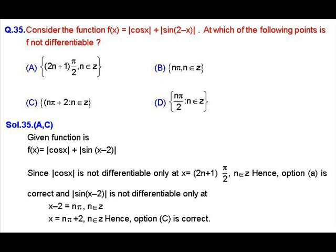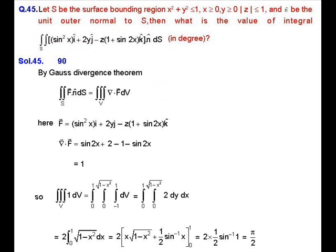Mod of sin(2 minus x) will not be differentiable where sin(2 minus x) equals 0, that is when 2 minus x equals nπ, so x equals nπ plus 2 for any integer n. At these points, mod of cos x will be differentiable, so by the same algebra of differentiability, f will not be differentiable at these points either. So option C is also true, and our answer is A and C.